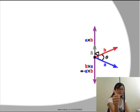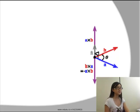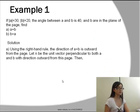So when you go from A to B, you make this kind of curve. When you make this, your thumb is pointing up. Therefore, the direction of A cross B is outward from the page.